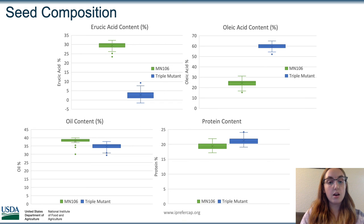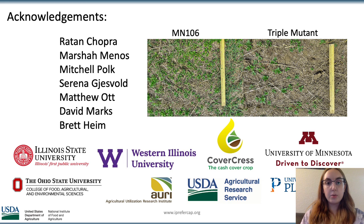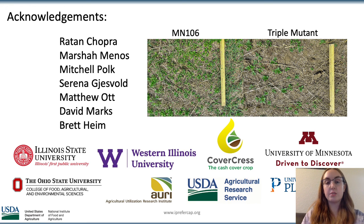The bottom two graphs show that unfortunately the triple mutant did have slightly less oil percentage content, but it did have slightly more protein content, which is also a beneficial trait. In summary, the triple mutants we were studying had increased yield, increased oleic acid, decreased erucic acid, and increased protein content, which are all desirable traits. Thank you for listening.